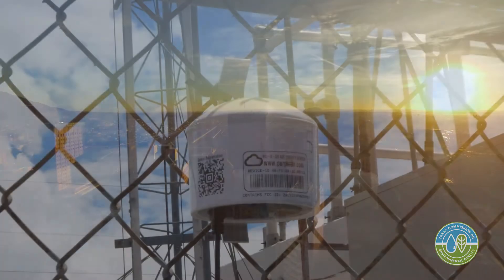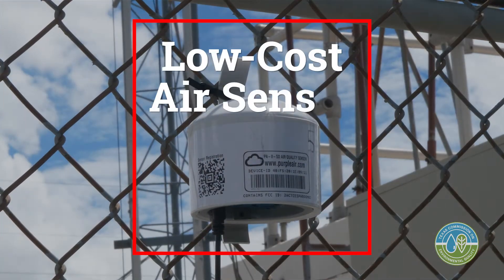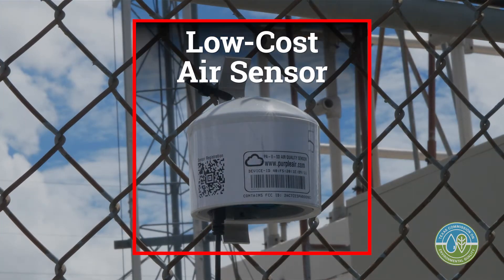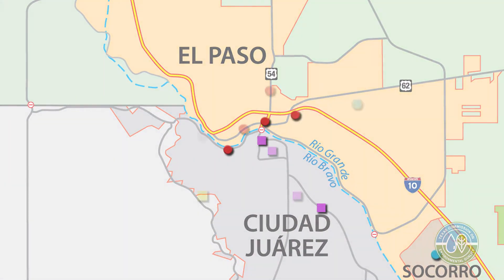We set up an air monitoring network with these low-cost sensors in El Paso and Ciudad Juarez at 31 sites, either at elementary schools or industrial zones.